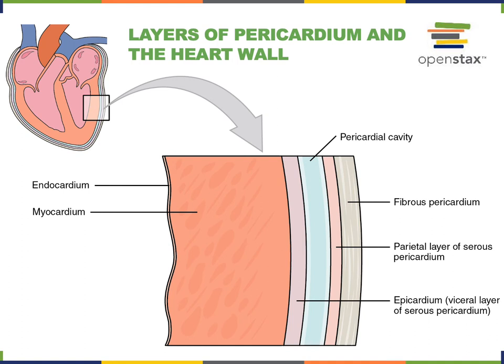Deep to the fibrous pericardium is the parietal layer of the serous pericardium, which consists of a simple squamous epithelium anchored to the fibrous pericardium by some loose areolar connective tissue.